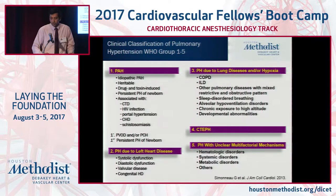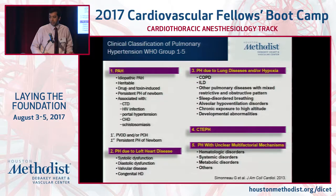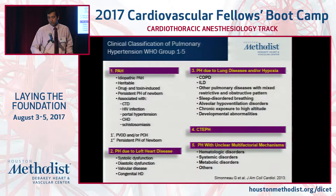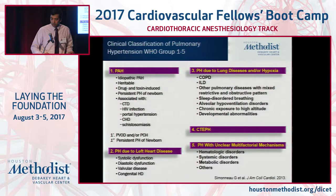These are patients with systolic and diastolic dysfunction and valvular heart disease. The third group is due to lung disease and/or hypoxia — COPD, interstitial lung disease. The fourth group is chronic thromboembolic PH in patients who've had PEs in the past with pulmonary vascular remodeling leading to PH. Group one and group four PH are the ones to really pay attention to, as these two have approved therapies. Group four CTEPH is curable with surgery — pulmonary thromboendarterectomy.